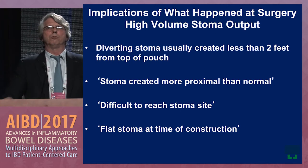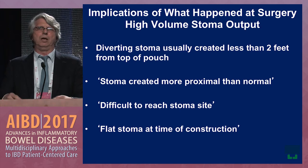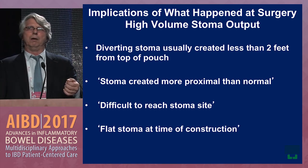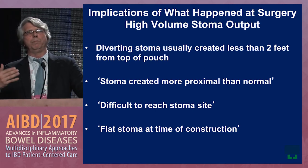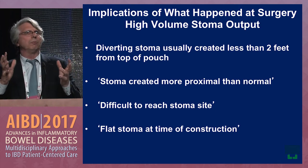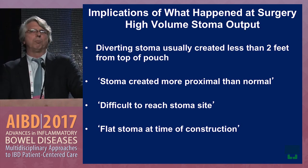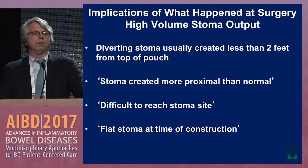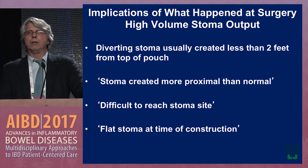High-volume stoma output — three to four liters a day — is commonly assumed to mean unrecognized IBD of the small bowel, but that's often not the case. We create diverting stomas approximately two feet above the top of the J pouch. If the op report notes the stoma was created more proximal than normal due to the mesentery, or that the stoma site was difficult to reach, or there was a flat stoma at construction indicating tension — those are red flags for high output due to a too-proximal stoma, unrelated to IBD.